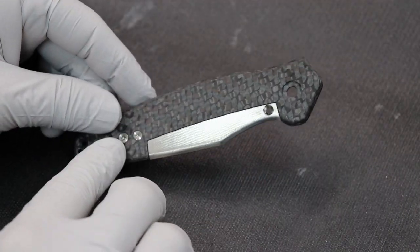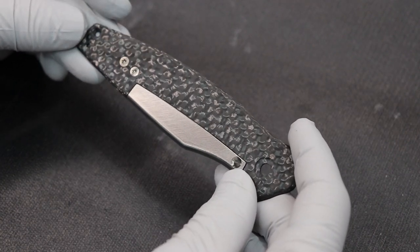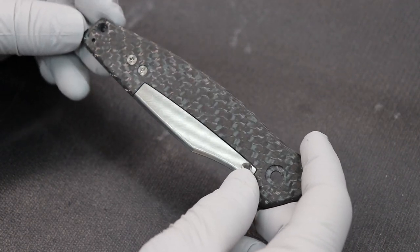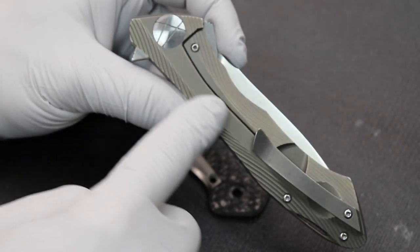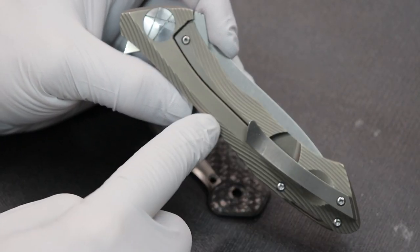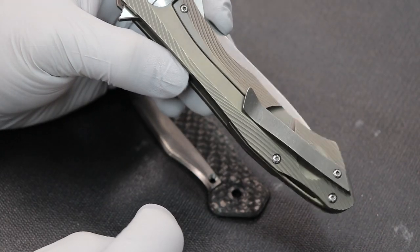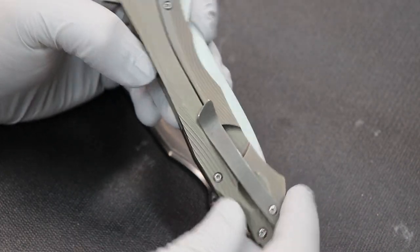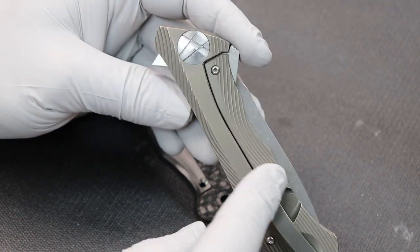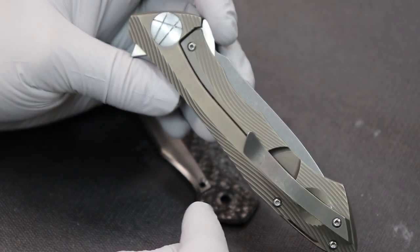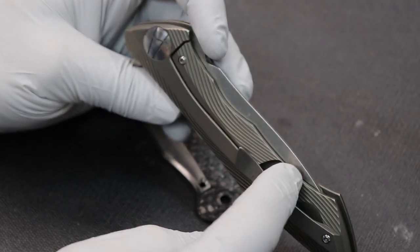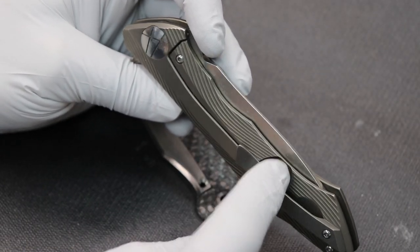The obvious choice would be to go with a full integral frame lock and it looks something like this where you have the lock bar and the frame or the scale all in one piece and that style of lock is very common. The problem with these types is that it's obviously very heavy because it's all one piece of titanium and you need it to be titanium on the lock bar so that it can bend at this pivot point.